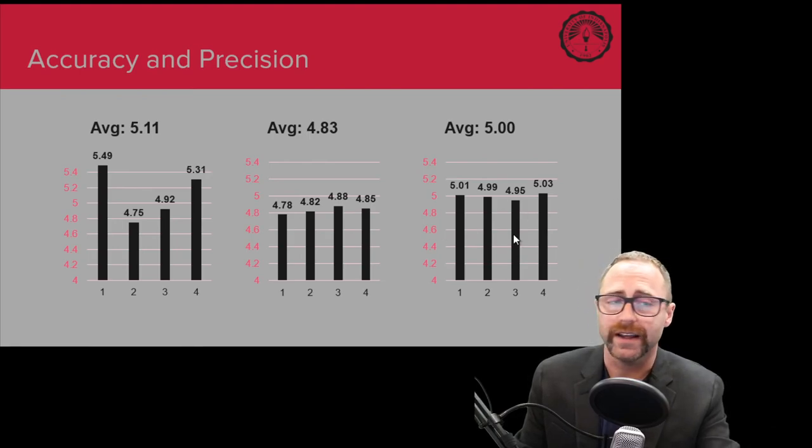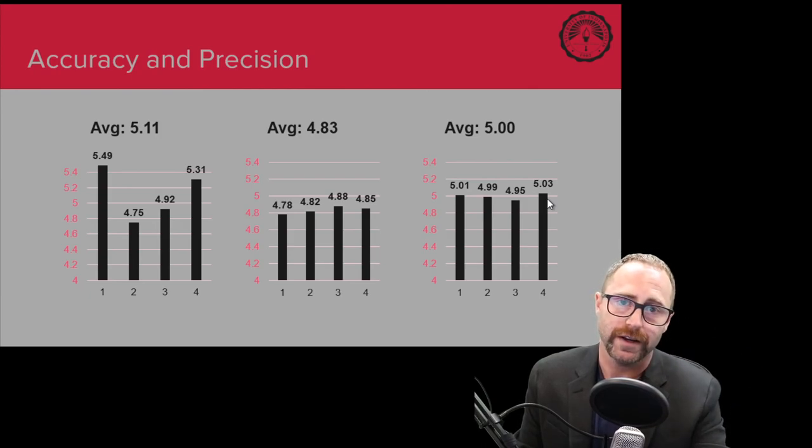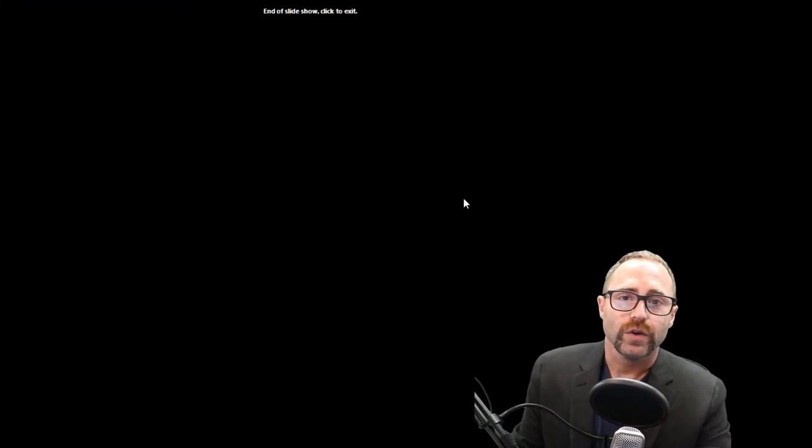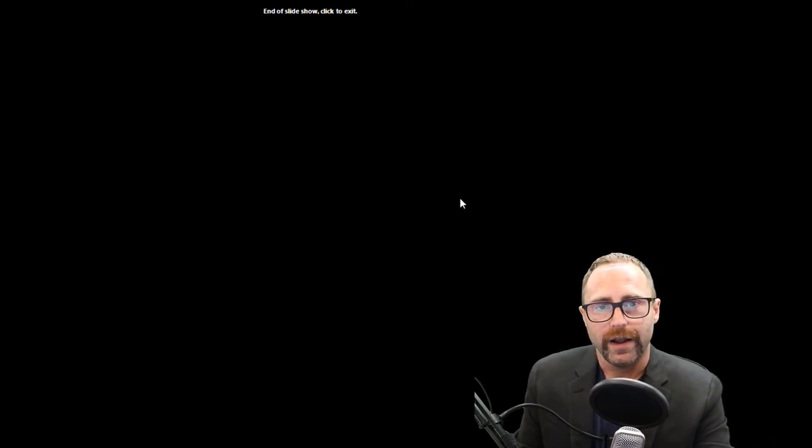Now, finally, in our last data set, we have something that is both accurate and precise. Our average just coincidentally happens to land right at exactly what the true value of the density is, and we can see in our data we're having some fluctuations in the numbers, but they're all pretty nice little tight spacing there. So it's precise measurements that we're taking, and they seem to be accurate as well. So that's going to cover our additional video content for Section 1.5 of your textbook. If you have any questions, please let me know, and thank you very much.